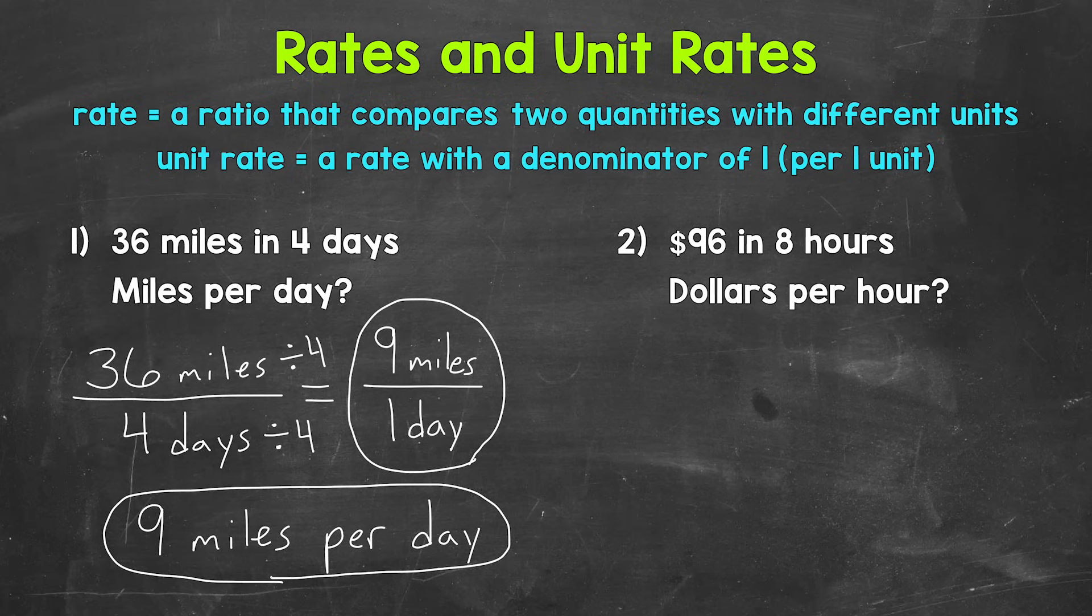Let's move on to number 2, where we have 96 dollars in 8 hours. So someone makes 96 dollars in 8 hours. We will write that as a rate in fractional form, and then find the unit rate. So let's first write that as a rate in fractional form. So we have 96 dollars in 8 hours. So that's our rate.